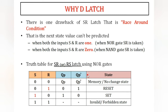This is the SR latch designed using NOR gates. When R is 1, the output is reset — that is the reset state. When S is 1, the output is set to 1 — that is the set state. If S and R are both equal to 1, the output is invalid, sometimes 0 and sometimes 1. This is called the race-around condition. To overcome this drawback, we go for D latch.